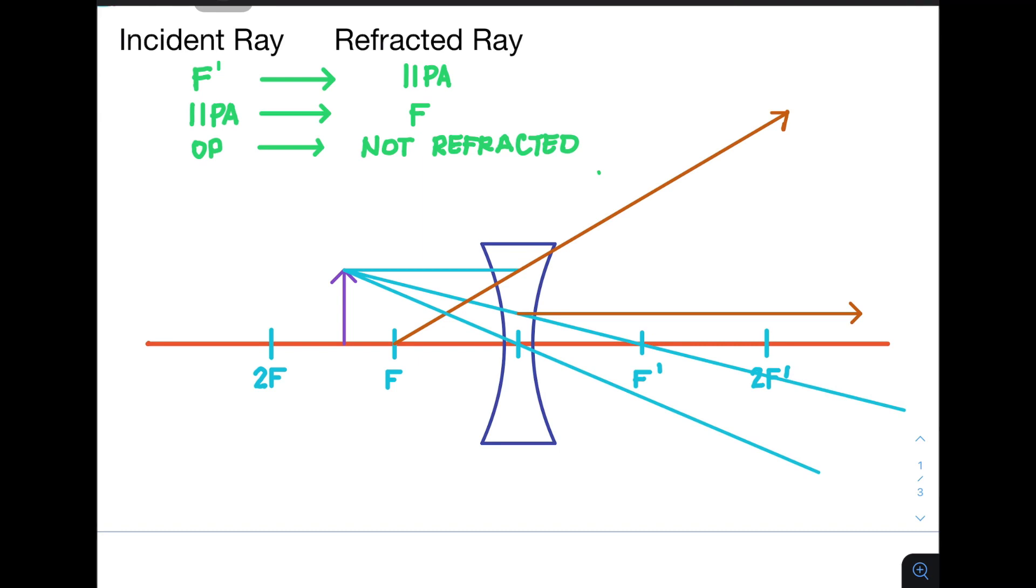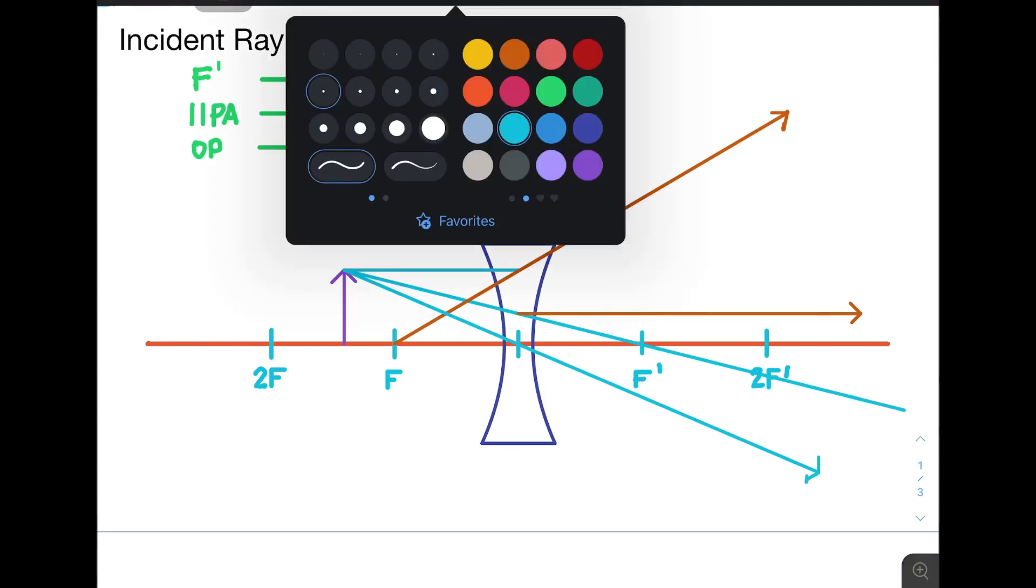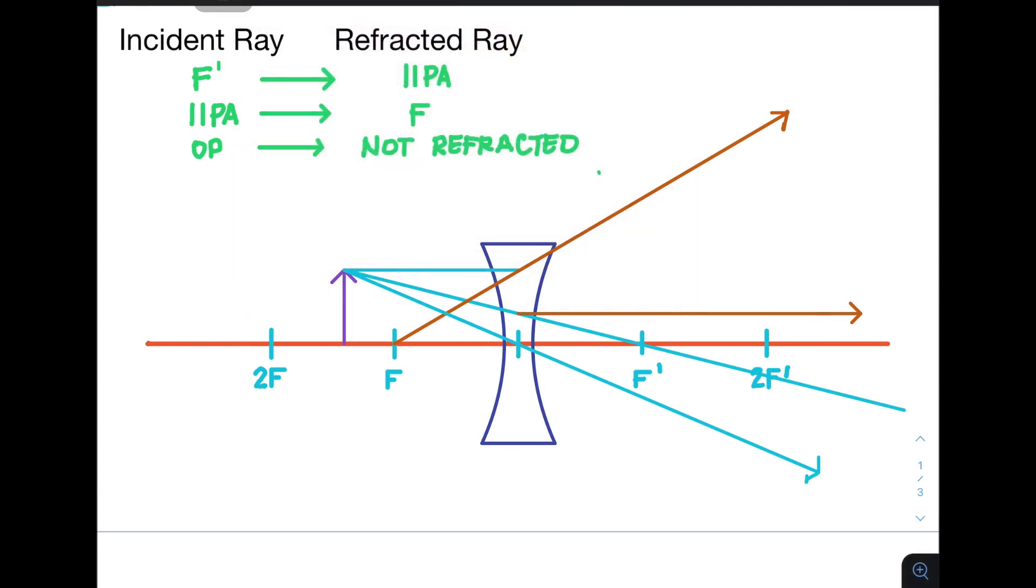Now, notice that the lines or the refracted rays cannot meet or does not meet even if you extend them infinitely. So same rules to convex and mirrors or curved mirrors, we are going to extend the rays to the opposite side, and we name it as virtual rays,